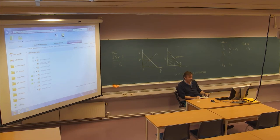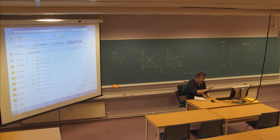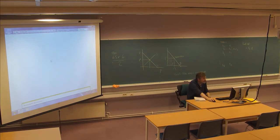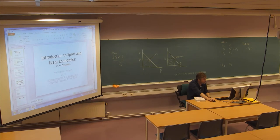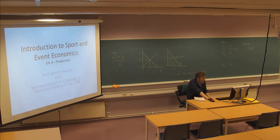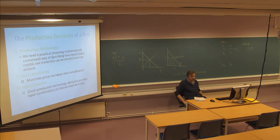Now we move into chapter 6, which has the title of Production. We leave the consumer and move into the producer — the two main groups of interest in this course. Let's start by discussing the typical production decisions of a firm.